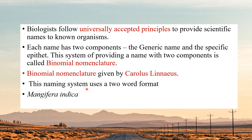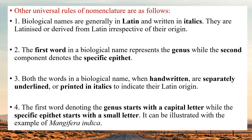Binomial Nomenclature is a naming system with a two-word format. For example, as NCERT gives: Mangifera indica is the scientific name for mango. The first word is the generic name — the genus — and the second word is the specific epithet — the species.